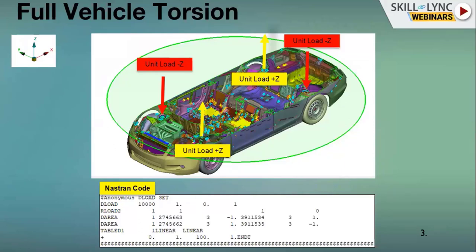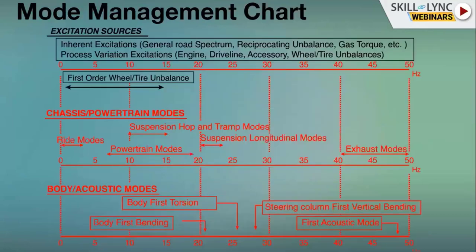Using the DLOAD, RLOAD, and DAREA cards: the DAREA card specifies the amplitude and direction of the load, the RLOAD card combines the DAREA card with the forcing frequency defined via the TABLED card, and the RLOAD card is then combined in the DLOAD card, which is declared in the Case Control section. When this simulation model is run, a peak appears — for example at around 29 Hz — which clearly identifies the torsion mode frequency of the vehicle.